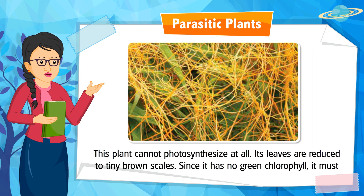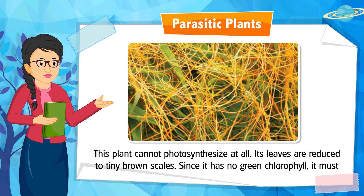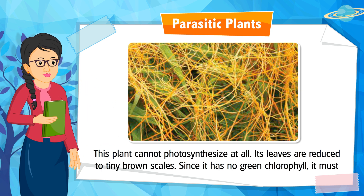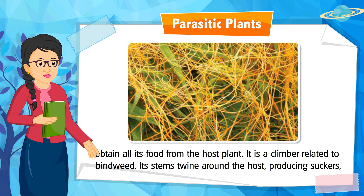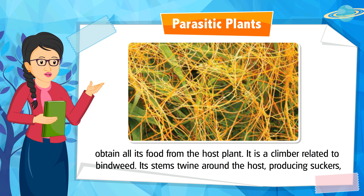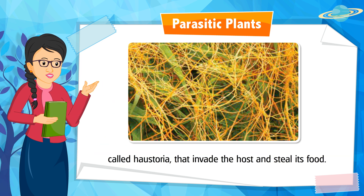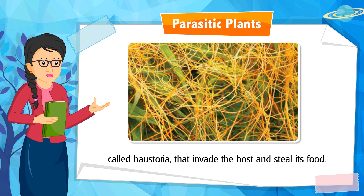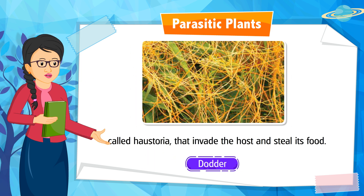This plant cannot photosynthesize at all. Its leaves are reduced to tiny brown scales, and since it has no green chlorophyll, it must obtain all its food from the host plant. It is a climber related to bindweed. Its stems twine around the host, producing suckers called haustoria that invade the host and steal its food. It is Dodder.